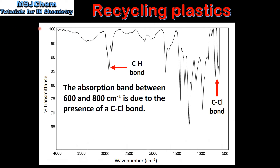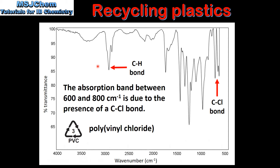Next we look at an infrared spectrum and use the data in Table 26 to identify the bonds present. On the right we can see an absorption band with a wavenumber of between 600 and 800 cm⁻¹. This is due to the presence of a carbon to chlorine bond. We also have an absorption band with a wavenumber of approximately 3000 cm⁻¹. This is due to the presence of a carbon to hydrogen bond. So in this infrared spectrum we have identified a carbon to hydrogen bond and a carbon to chlorine bond.